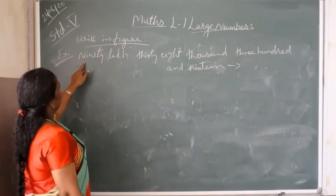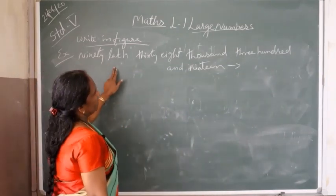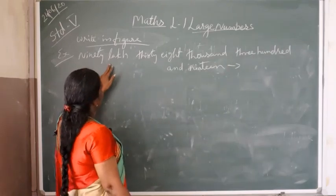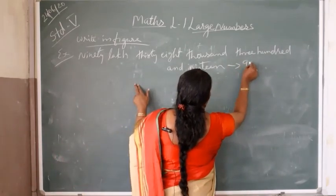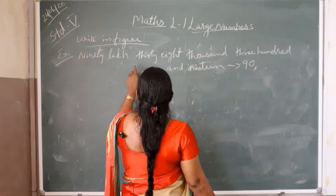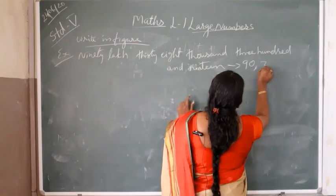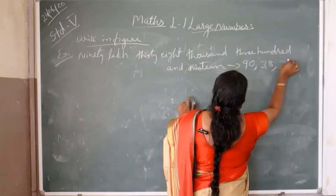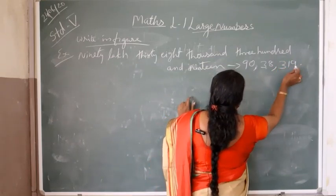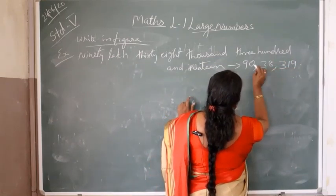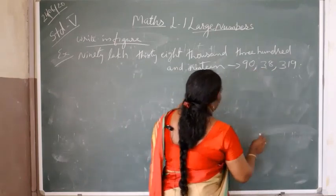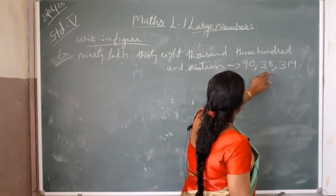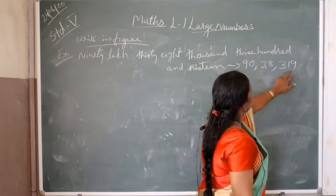For example, 90,38,390. Ninety lakhs — we write 90 in the lakhs place, then 38,390. Ones, tens, hundreds, thousands, ten-thousands, lakhs, and ten-lakhs. So 90,38,390.